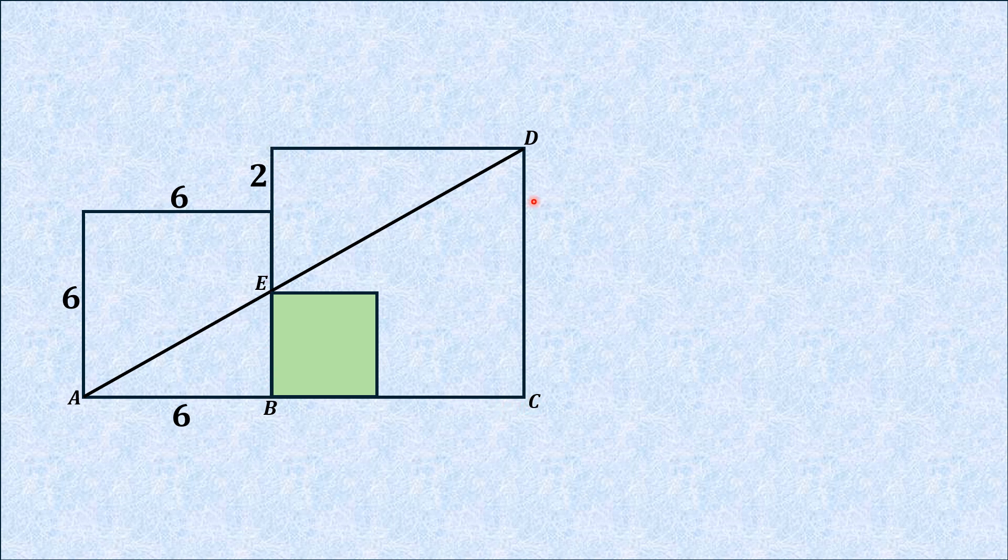The larger square has a side length of 8 units. Moreover, angle ABE is 90 degrees because it's an angle at the vertex of the smaller square. Similarly, angle ACD is also 90 degrees because it's an angle at the vertex of a square.